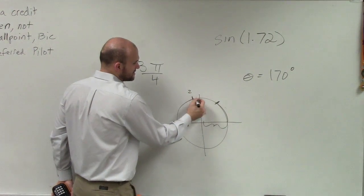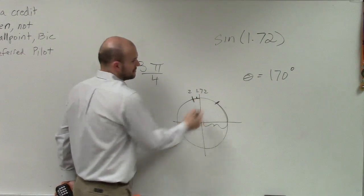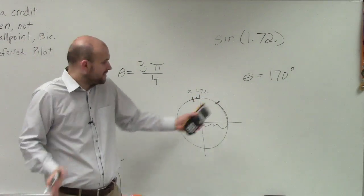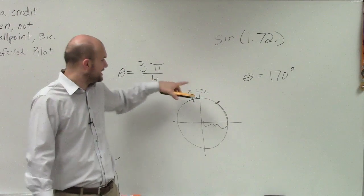So this is 1.72 radians. So let's say here's 2 radians. Well, then it's like right there, right? So it's 1.72. It's a part of radian, but it's in radian measure. It's just not in terms of pi.